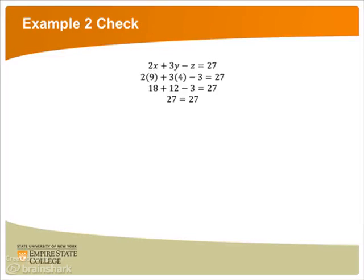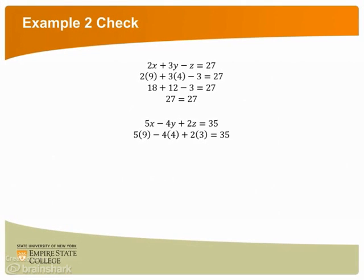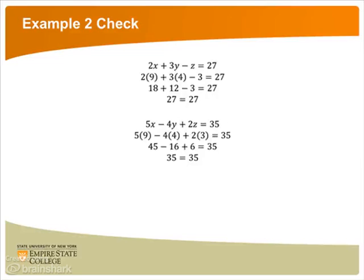Now let's try the second equation. We have 5 times x minus 4 times y plus 2 times z equals 35. Plugging in, 5 times 9 minus 4 times 4 plus 2 times 3, which we posit is 35. Multiplying gives us 45 minus 16 plus 6, hopefully to be 35. And this works too.